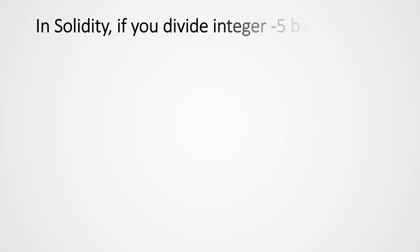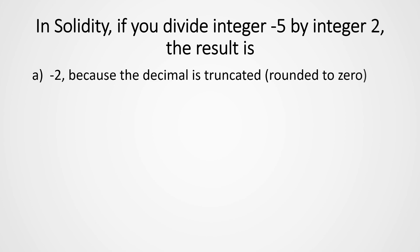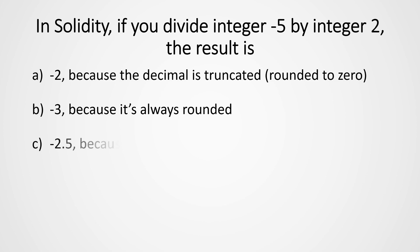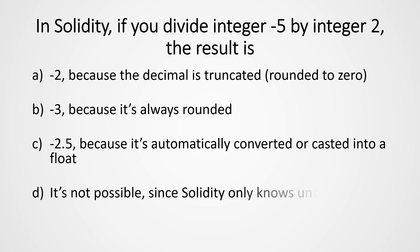Next question: In Solidity, if you divide the integer minus 5 by the integer 2, the result is: A — minus 2, because decimals are truncated or rounded to zero; B — minus 3, because it's always rounded correctly; C — minus 2.5, because it's automatically converted or cast into a float; or D — it's not possible since Solidity only knows unsigned integers.